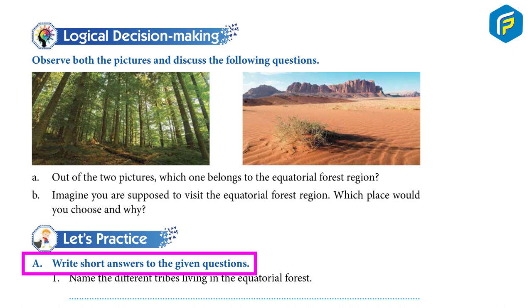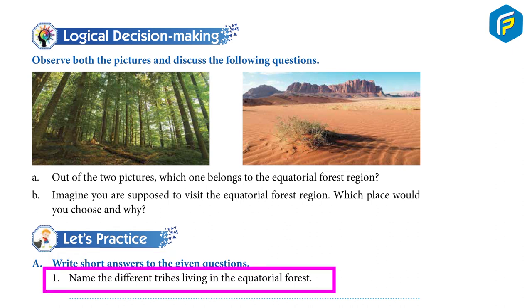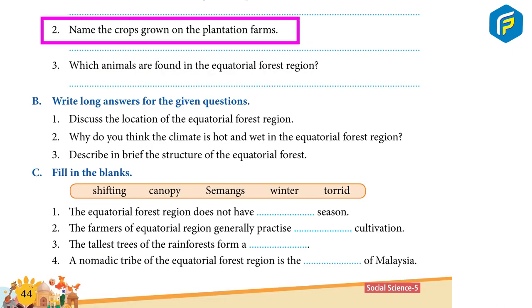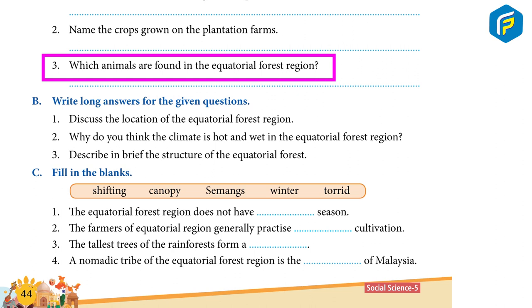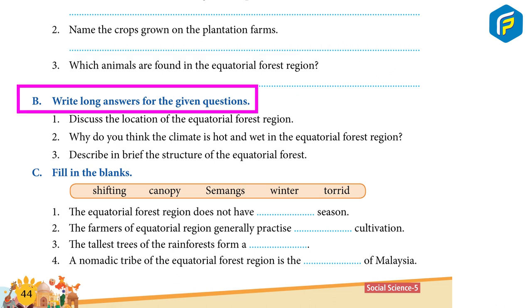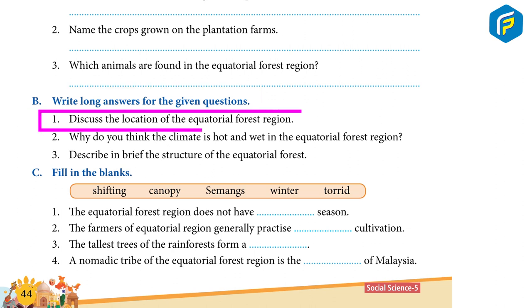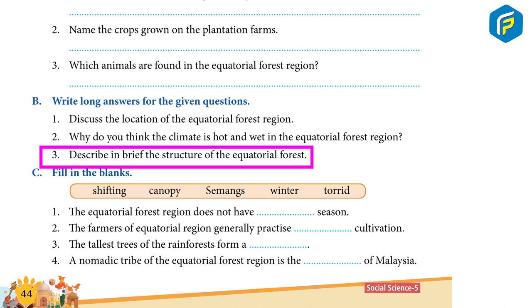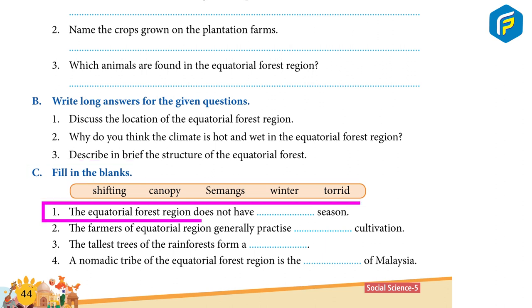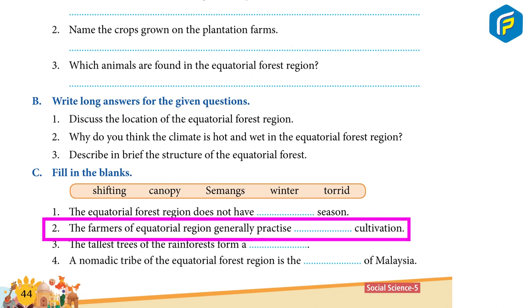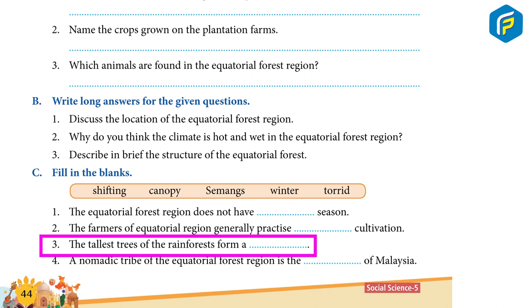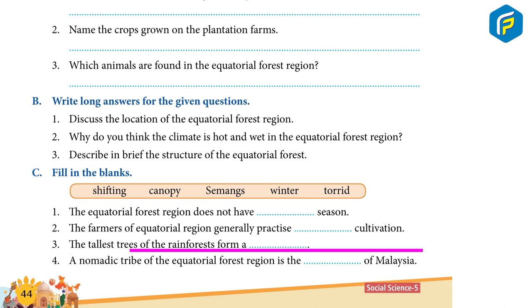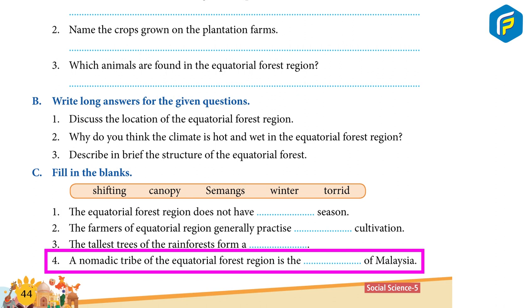Practice questions — short answers: 1) Name the different tribes living in the Equatorial Forest. 2) Name the crops grown on plantation farms. 3) Which animals are found in the Equatorial Forest Region? Long answers: 1) Discuss the location of the Equatorial Forest Region. 2) Why is the climate hot and wet in the Equatorial Forest Region? 3) Describe in brief the structure of the Equatorial Forest. Fill in the blanks: 1) The Equatorial Forest Region does not have any __ season. 2) The farmers of the Equatorial Region generally practice __ cultivation. 3) The tallest trees of the rainforest form a __. 4) A nomadic tribe of the Equatorial Forest Region is the __ of Malaysia.